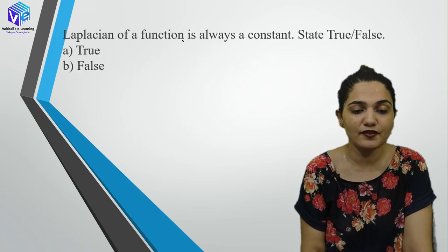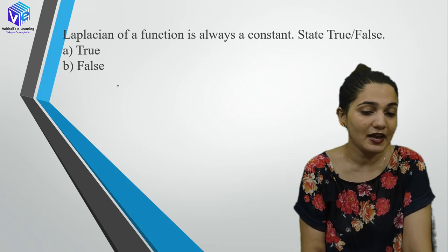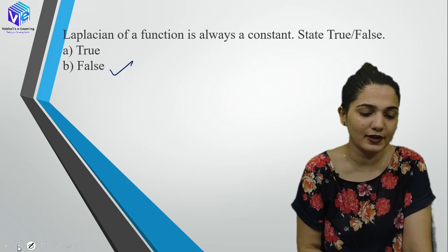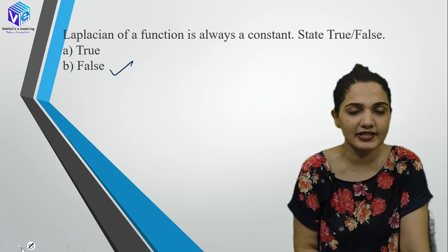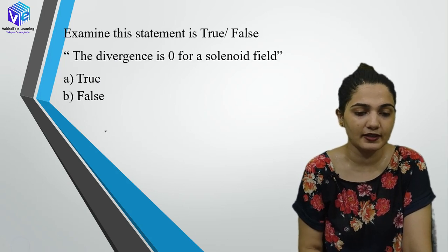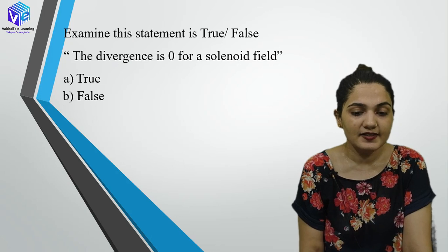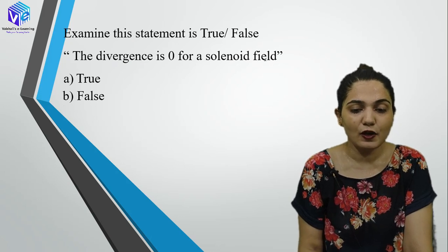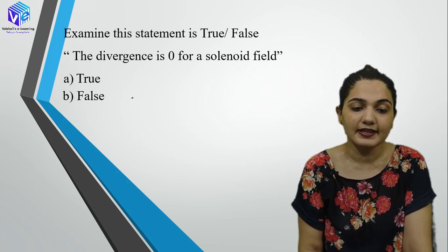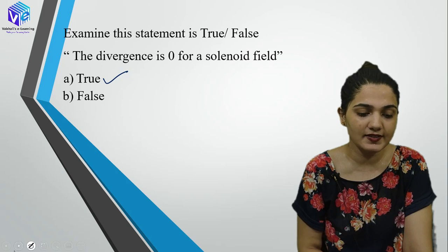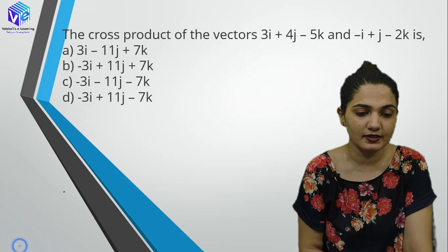Laplacian of a function is always a constant — 'always' appears again, so this is false, and it actually is false. The divergence is zero for a solenoidal field — yes, this is true. The condition for a solenoidal field is that divergence must be zero.